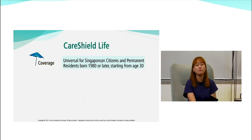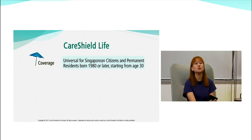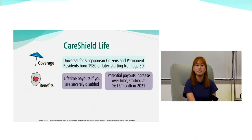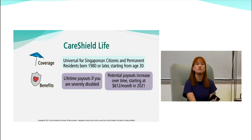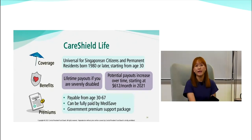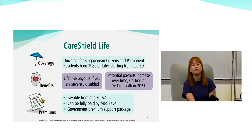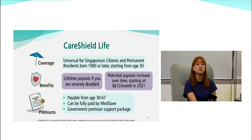For those born in 1979 or earlier, you could be under ElderShield, which is an older scheme. Under CareShield Life, lifetime payouts are provided in the event you are severely disabled. Potential payouts increase over time, starting at $612 per month in 2021. Premiums from age 30 to 67 can be fully paid using MediSave. For lower-income groups, the government provides premium support packages to ensure they're also covered.